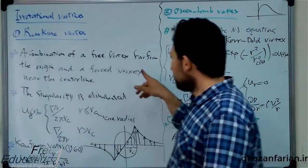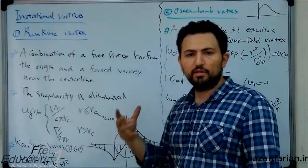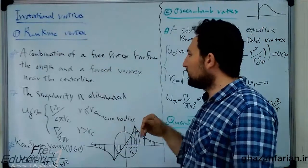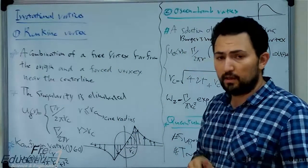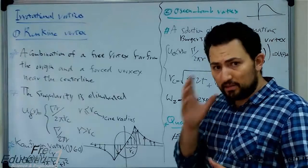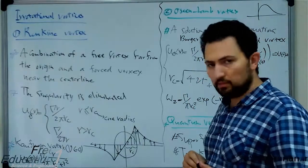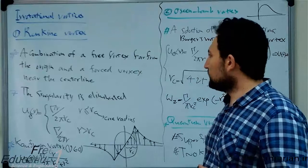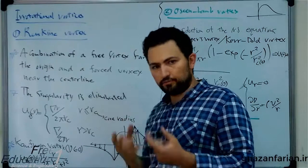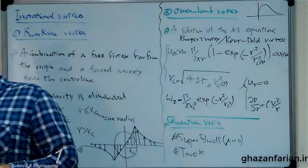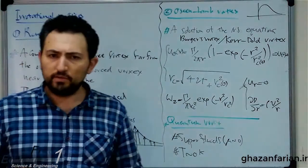Far from the origin, we use the mathematical model of the free vortex, and near the origin we have to find a substitution to omit the singularity. The Rankine vortex uses the forced vortex formula in the core region, which was a linear distribution of velocity.